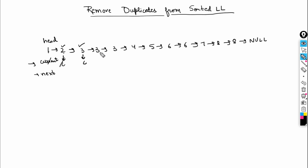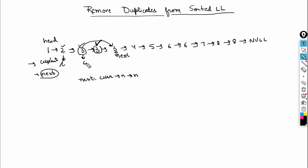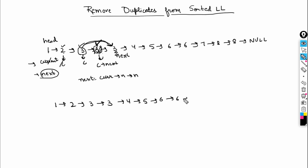When current's data equals current's next data — say both are 3 — we need a pointer from the current node to the node after the duplicate. We set next = current.next.next, placing next on the node after the duplicate. Then we remove current.next (the duplicate node), and connect current's next to next. This way the list is not lost. For the list 1, 2, 3, 3, 3, 4, 5, 6, 6, 7, 8, 8 — the first duplicate 3 is deleted, with current still on the first 3 and next pointing ahead.